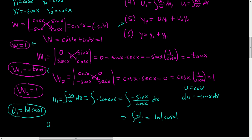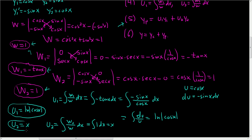Now u2 is the integral of W2 over W dx. W2 is 1 and W is 1, so we get the integral of 1 dx, which is simply x. So u2 equals x. We are almost there.